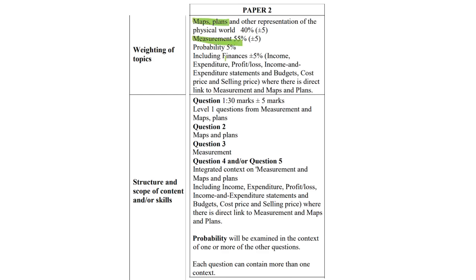Maps and plans is going to be a gross total of about 40 percent — plus or minus, so either 35 or 45. Measurement is the big one; it's kind of like finance in paper one, and we've also got some probability.